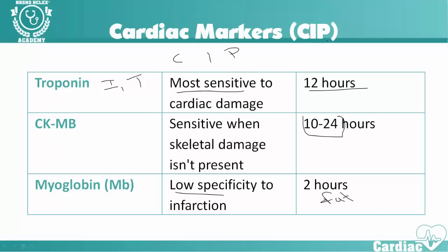Myoglobin peaks the fastest but has very low specificity. The number we're really going to be concerned about is our troponins — most of all, troponin I. If our troponin I is elevated, that's indicative of infarction. Especially if we can match that up with an EKG showing ST elevation and elevated troponins, the patient is having a heart attack. If they have a non-STEMI but elevated troponins, we can also determine they may be having a heart attack.